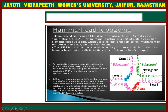Hammerhead ribozymes are tiny catalytic RNA that cleave single-stranded RNA. They are found in nature as part of certain virus-like elements. The hammerhead ribozyme is so named because its secondary structure resembles that of a hammerhead. The autocatalytic cleavage occurs via a nucleophilic attack by the 2-hydroxyl of a specific nucleotide on its adjacent phosphodiester bond, which produces a 2-3-cyclic phosphate. It uses a rolling circle mechanism for the replication of ribozymes.